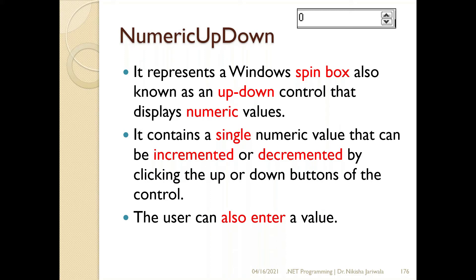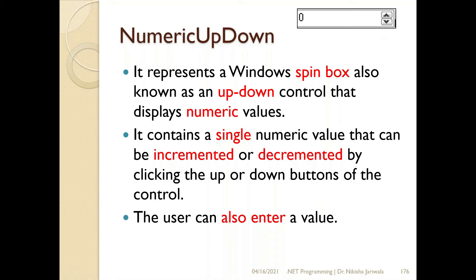The next control is the NumericUpDown control. Just like the DateTimePicker control has a combo box drop-down list, you can also make it work as a spinner. That DateTimePicker control can also be treated as a spinner. This spin box is visible on the right-hand side of the NumericUpDown control — it has an up arrow and a down arrow that lets us spin, i.e., increment or decrement the value.